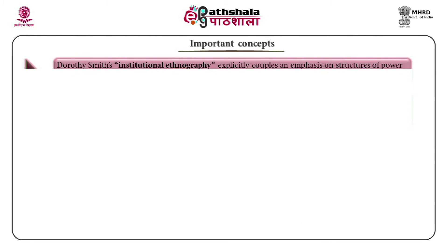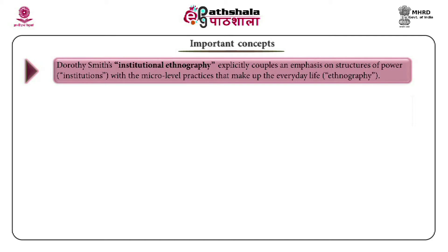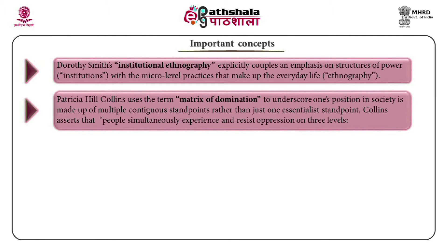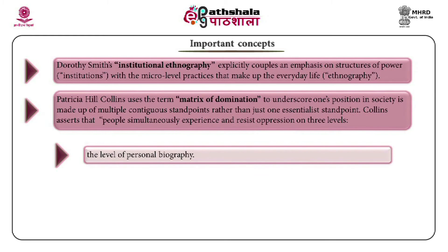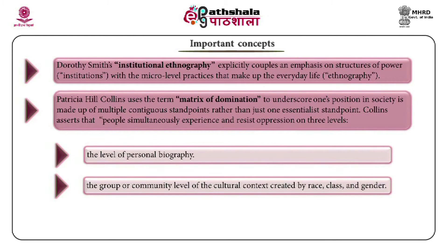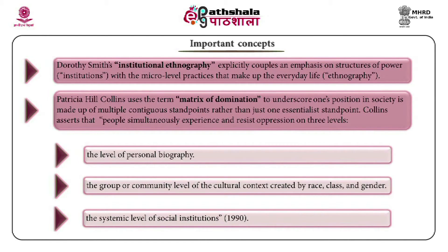Dorothy Smith's institutional ethnography explicitly couples an emphasis on structures of power with the micro-level practices that make up everyday life. Patricia Hill Collins uses the term 'matrix of domination' to underscore that one's position in society is made up of multiple contiguous standpoints rather than just one essentialist standpoint. Collins asserts that people simultaneously experience and resist oppression on three levels: the level of personal biography, the group or community level of cultural context created by class, race and gender, and the systematic level of social institutions.